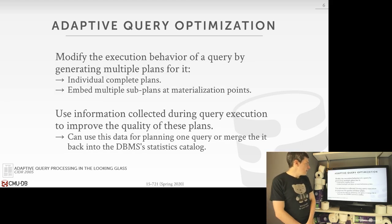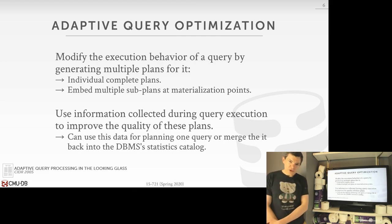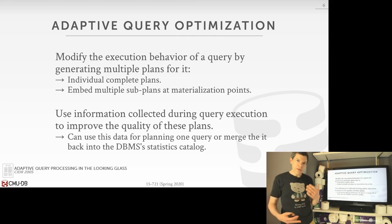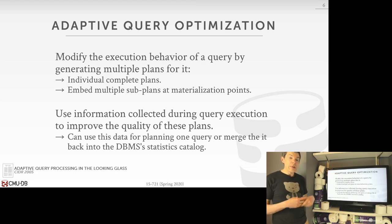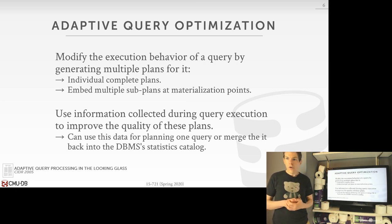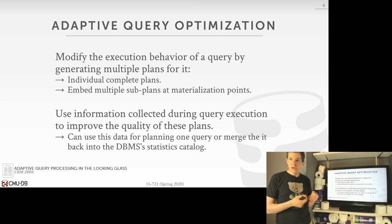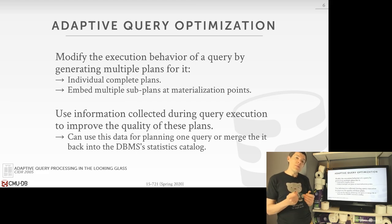The technique we're talking about today is called adaptive query optimization — sometimes called adaptive query processing in the research literature; they're essentially synonymous. The idea is that this technique allows the database system to modify the query plan to better fit what the actual underlying data looks like. We can modify the plan by generating an entirely new query plan and starting over, or we could modify a subset of the query plan by introducing new sub-plans at different materialization points, potentially switching from one plan strategy to another.